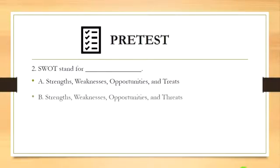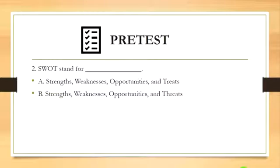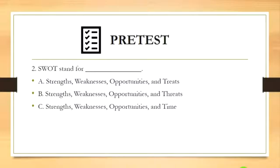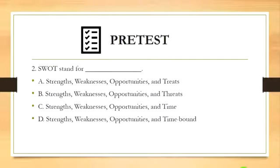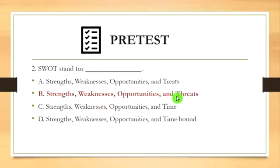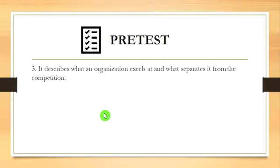Number two: this would stand for — A) strengths, weaknesses, opportunities and threats; B) strengths, weaknesses, opportunities and threats; C) strengths, weaknesses, opportunities and time; D) strengths, weaknesses, opportunities and time-bound. The answer is letter B, strengths, weaknesses, opportunities and threats — threats with an H, not 'treats' without an H.